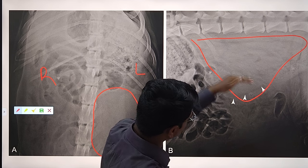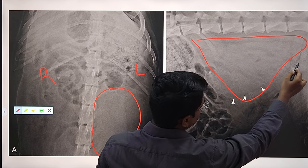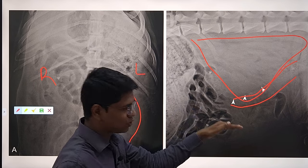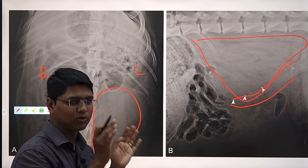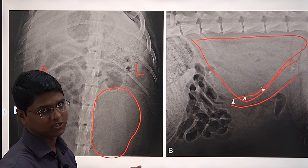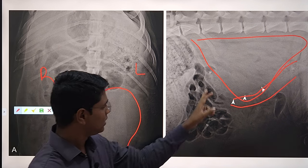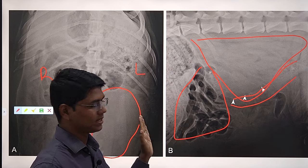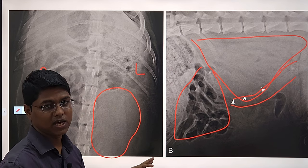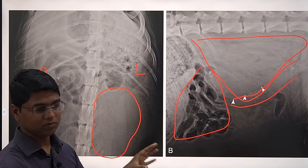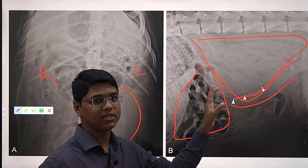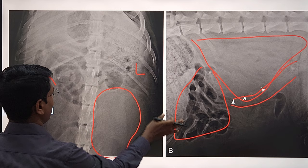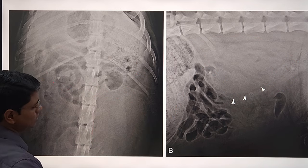Also, the descending colon is slightly pushed ventrally. Here the jejunums are cranially migrated — these jejunums are very important; they will tell you where the problem is, in which organ. So this is retroperitoneal fluid. They are also uncommon.